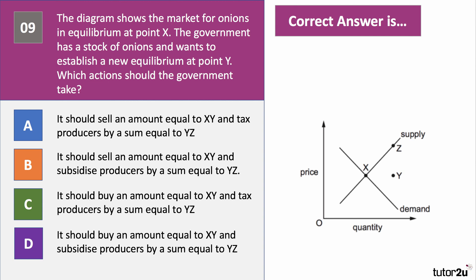The right answer is D. The government needs to go into the market to buy some onions — a quantity of XY — and equally offer a subsidy to onion producers equal to YZ. This shifts the demand curve out to D2 through government purchases, and encourages producers to produce through a subsidy equal to the vertical distance YZ, so the new equilibrium cuts through at point Y.